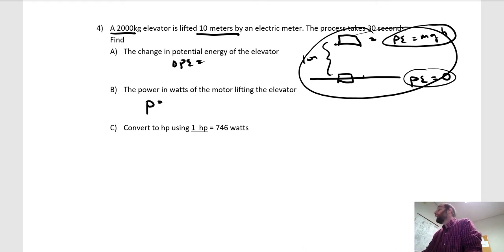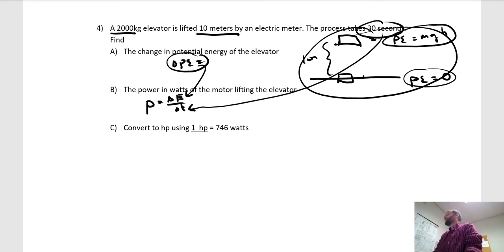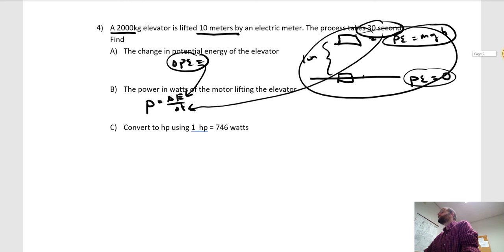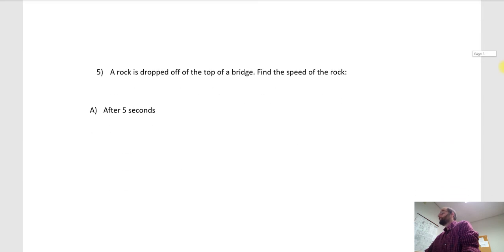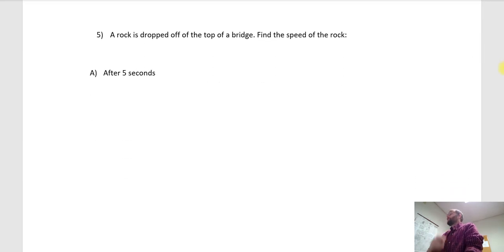The power. So power is change in energy over change in time. So when you get that value, you put that number here, the time, put that number there, and you're going to get a number in joules per second, which is a watt. And then part C is a unit conversion.